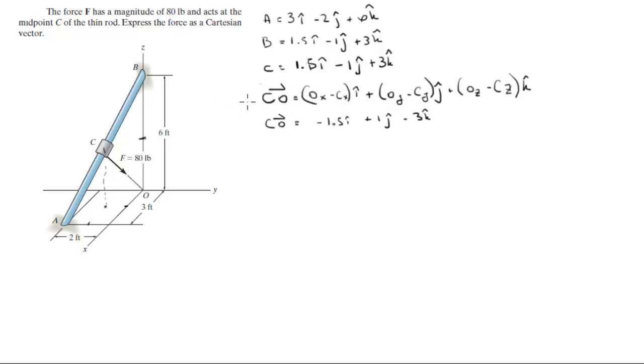And they want you to express this force in Cartesian which is acting along this vector. So what you're going to do is find the magnitude of the vector, which when you do the square root of the x component squared plus the y component squared plus the z component squared, you're going to get that it's equal to 3.5.